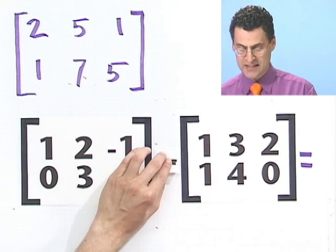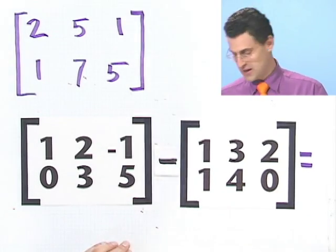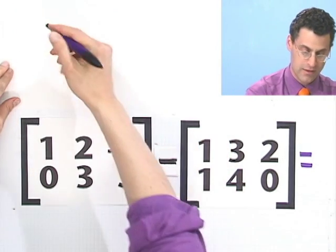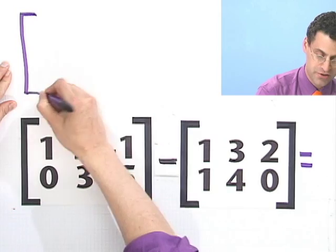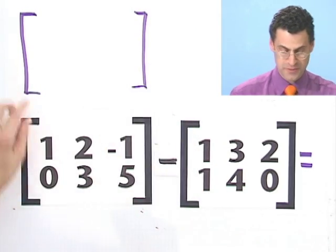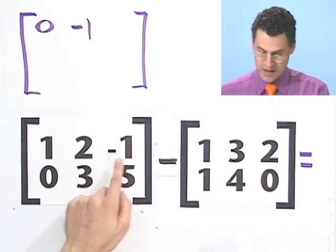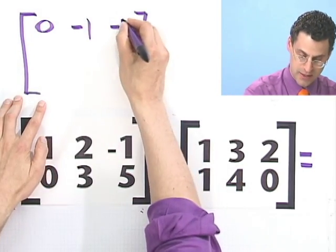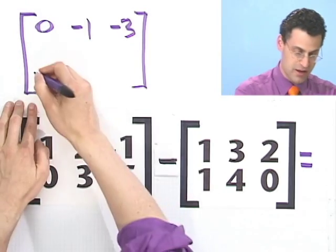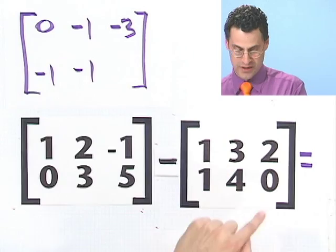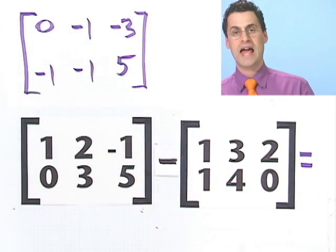Subtraction is, of course, the exact same deal. What would you do here? Subtraction, not a problem. You would still get a, in this case, two by three matrix. And you subtract. One minus one is zero. Two minus three is negative one. Minus one minus two is minus three. Zero minus one is minus one. Three minus four is minus one. And five minus zero is five.